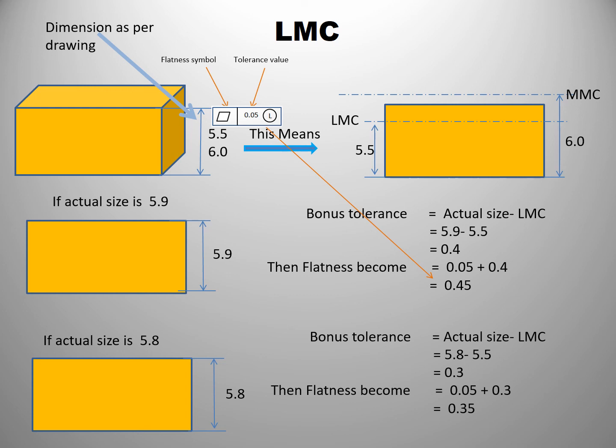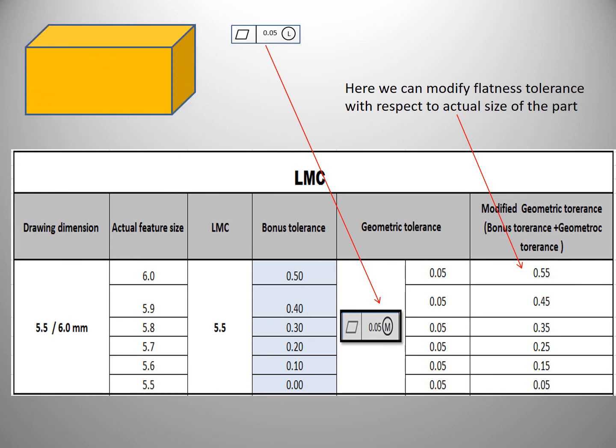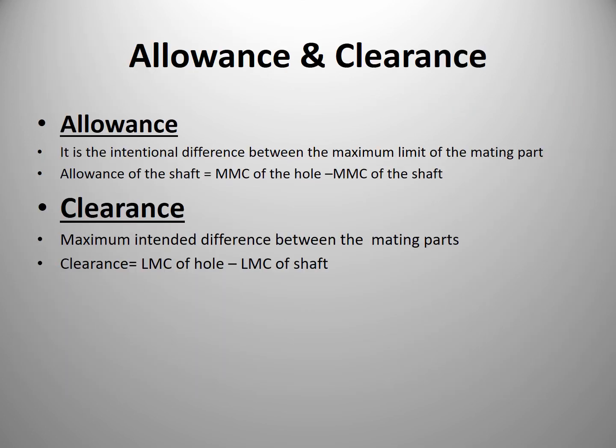By doing so, we can eliminate the rejection of the part. As you can see in the last column, the geometrical tolerance is modified as per the actual feature size. By modifying geometrical tolerance using bonus tolerance, we can avoid rejections.